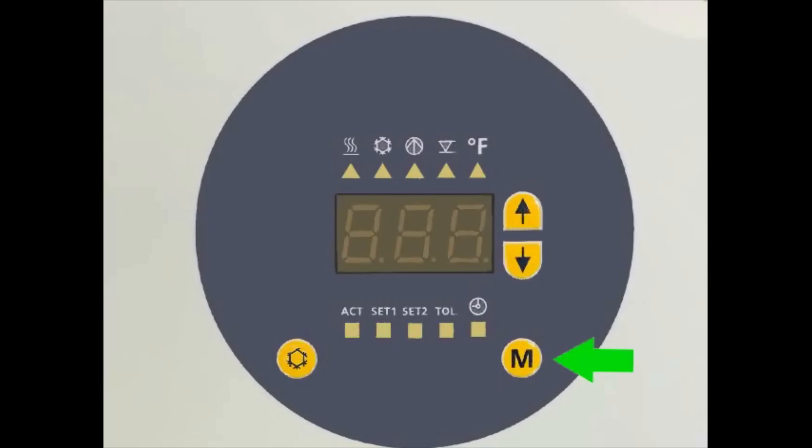The M is our mode button and it's used to switch between menus. The arrow keys are for changing the values in a menu. The snowflake button is used to activate and deactivate the cooldown function while in operation.